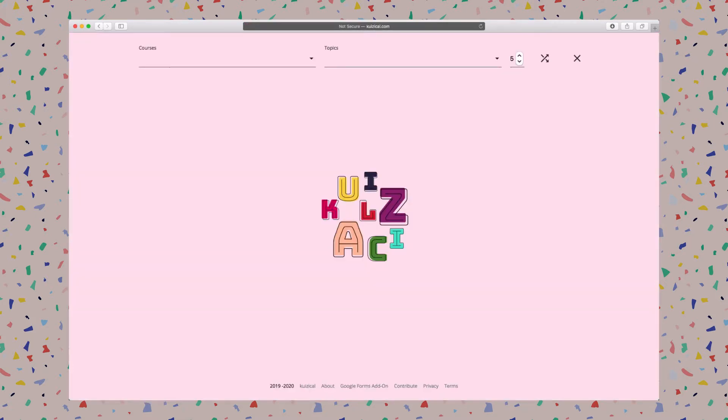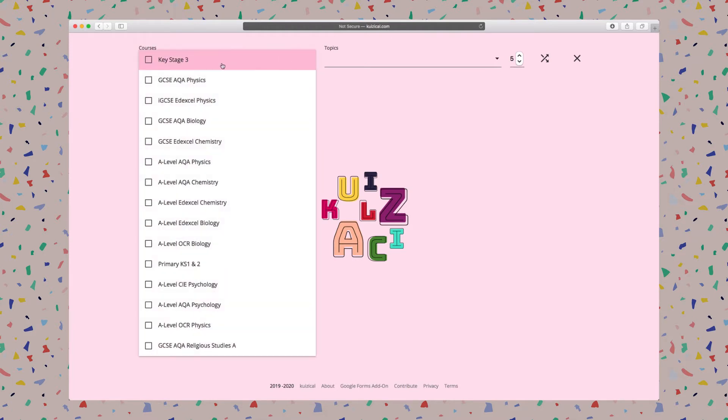It will open the main site. Here we go, you have a selection of courses here. Click on the drop-down, these are all the courses available. Let's say I would like AQA Physics GCSE.